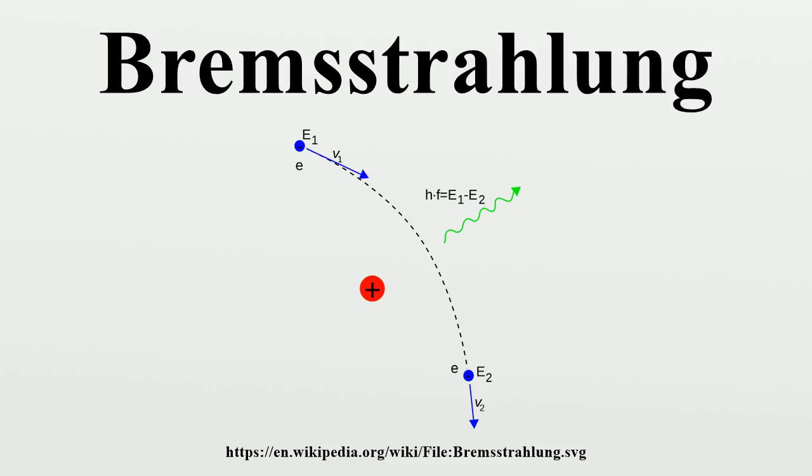The term is also used to refer to the process of producing the radiation. Bremsstrahlung has a continuous spectrum, which becomes more intense and whose peak intensity shifts toward higher frequencies as the change of the energy of the accelerated particles increases.